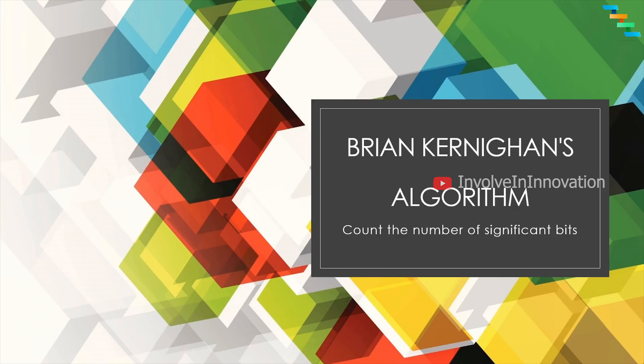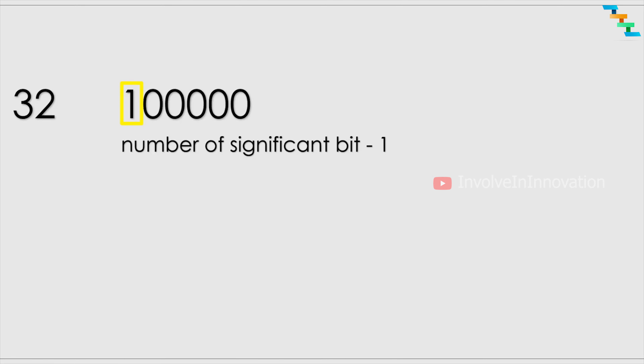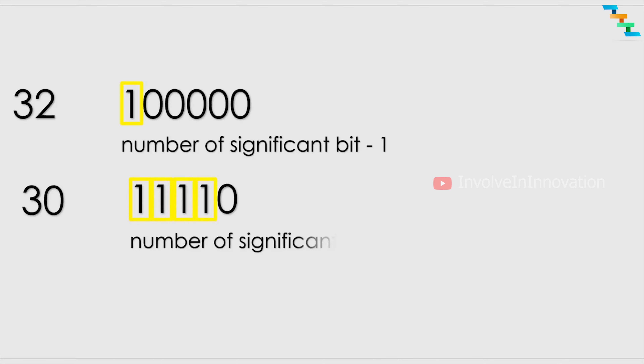Today we will see how to count the number of significant bits in a number using Brian Kernighan's algorithm. For example, if you convert the number 30 to binary form it will be 11110. There are four significant bits, so the number of significant bits in the number 30 is four.